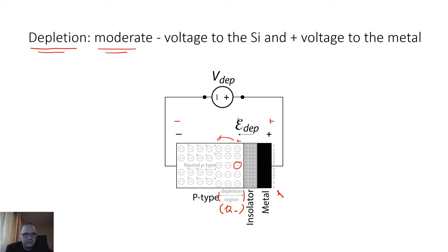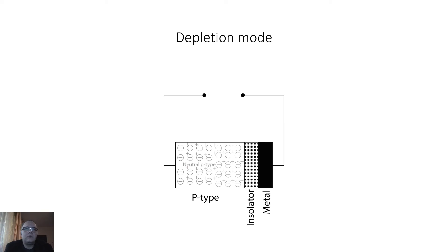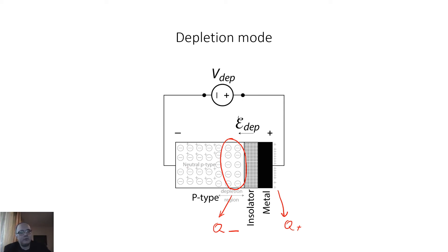The name depletion mode comes from the fact that at the interface between the semiconductor and the insulator, this region is depleted of carriers. All the holes are expelled from this region; they follow the externally applied field which leads them deep into the semiconductor, leaving behind exposed negatively charged ions. Here is a short animation of the depletion mode — note how the holes move away from the interface, and the immobile negative space charge that remains exactly compensates the positive charge of the metal plate.